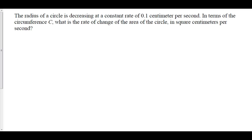The following is a related rates problem. The radius of a circle is decreasing at a constant rate of 0.1 centimeters per second. In terms of the circumference C, what is the rate of change of the area of the circle in square centimeters per second?